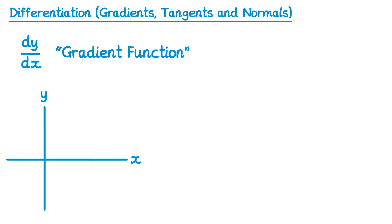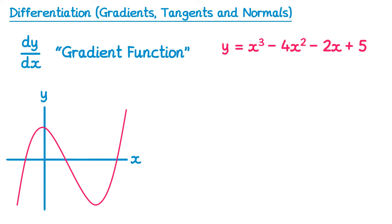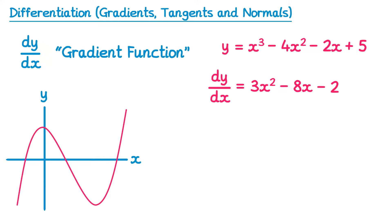Let's draw a graph with the equation y equals x cubed minus 4x squared minus 2x plus 5. We can calculate the gradient function using the power rule. So dy by dx equals 3x squared — we do 3 times 1 and reduce the power — then negative 8x, then negative 2, and the constant term differentiates to give 0. So we've found dy by dx, the gradient function.